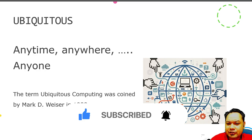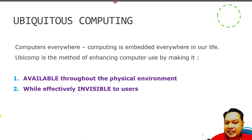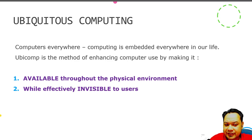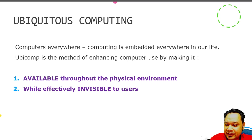So what exactly is the Ubiquitous Computing concept? Ubiquitous Computing is a marriage between the two words — Ubiquitous and Computing. The concept is that you integrate the computer inside an everyday physical object in order to enhance its functionality, and then it is hidden away from the user. It should be available throughout the physical environment while effectively invisible to the user, and the user does not realize that they are using a computer while interacting with that object.